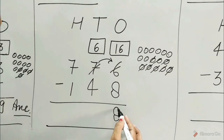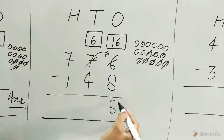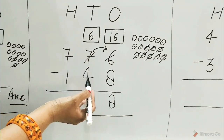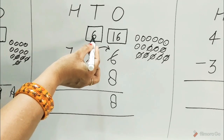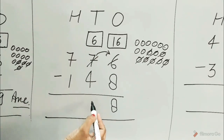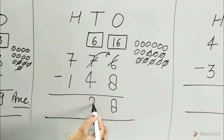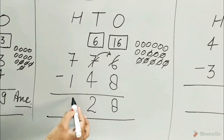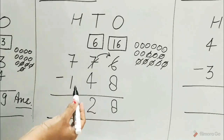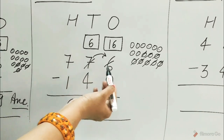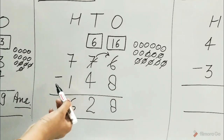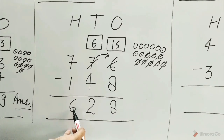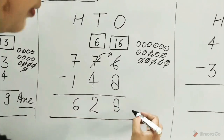Write 8 in the ones column. Subtract the tens column. 6 minus 4 is equal to 2. 7 minus 1 is equal to 6. Hence, 776 minus 148 is equal to 628. Answer.